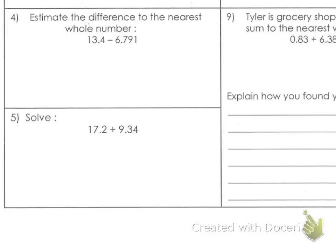Taking a look at question number 4 from your operations with whole numbers and decimals unit review. It says to estimate the difference to the nearest whole number. So we are rounding to the nearest. When you estimate, you round first, and then you do whatever operation.